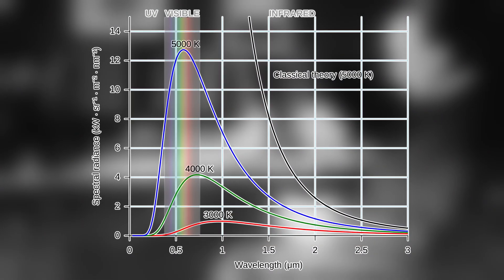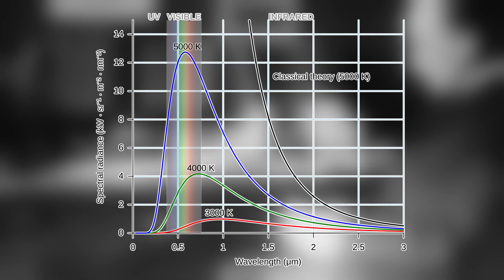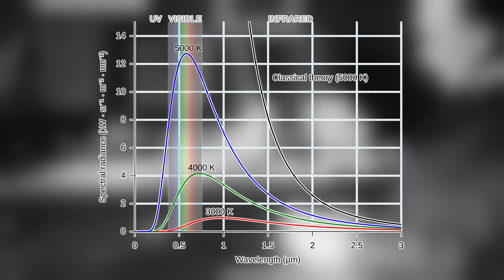When Planck saw his equation fit experimental data for radiative bodies, his whole perspective shifted, and he began to switch sides, from energeticism to atomism.